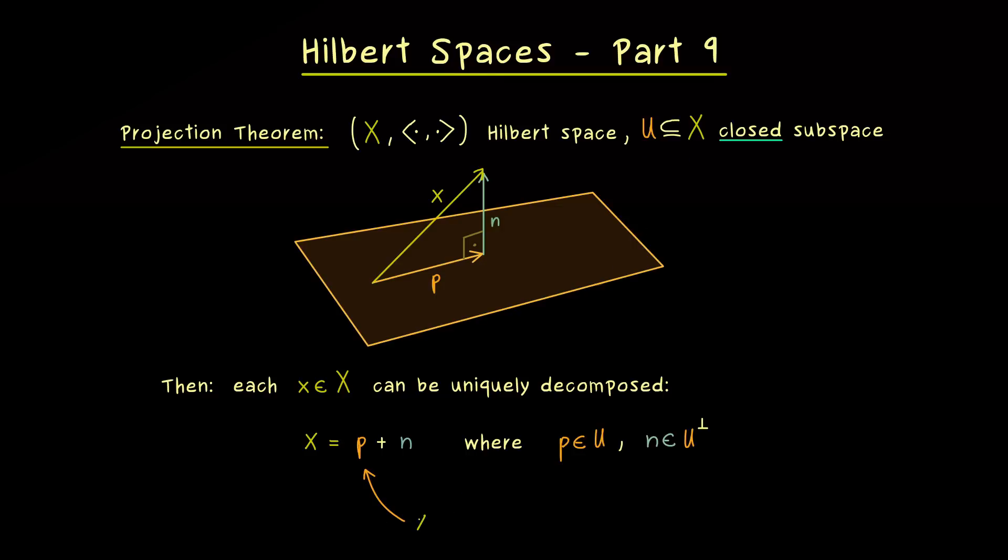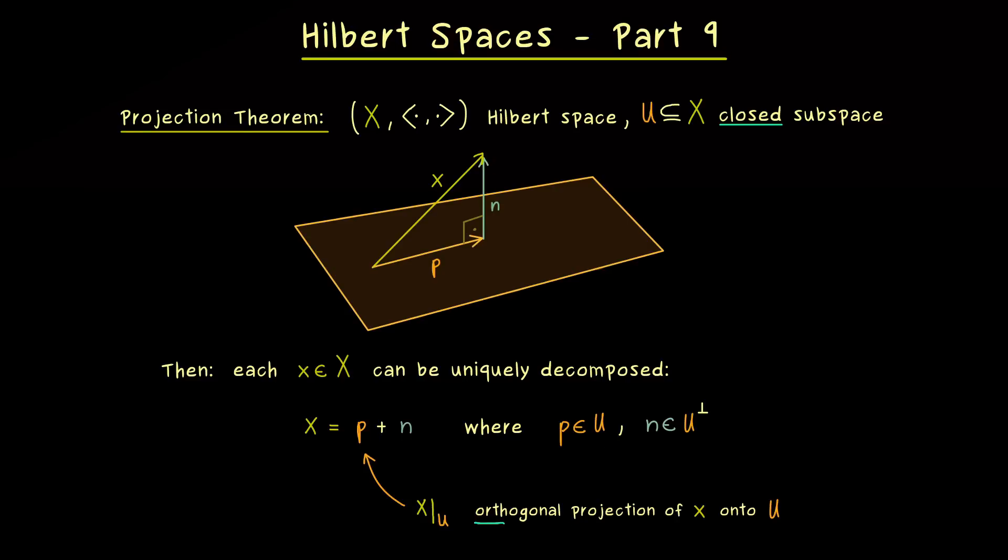And in order to make this clear, we can also write x restricted to U instead of p. And please note, we can only do this because the orthogonal projection is uniquely given. And on the other hand we can do exactly the same for the vector n. Hence there we would write x restricted to U perp. And now it might not surprise you, that we call this vector the orthogonal projection of x onto U perp.